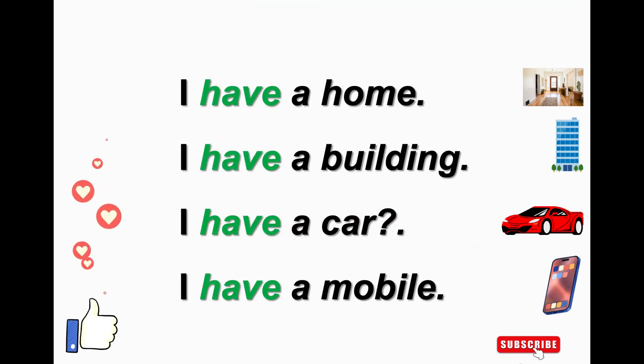Positive. I have a home. I have a building. I have a car. I have a mobile. These are statements without question marks, just with full stops. Let's see the negative of these sentences.